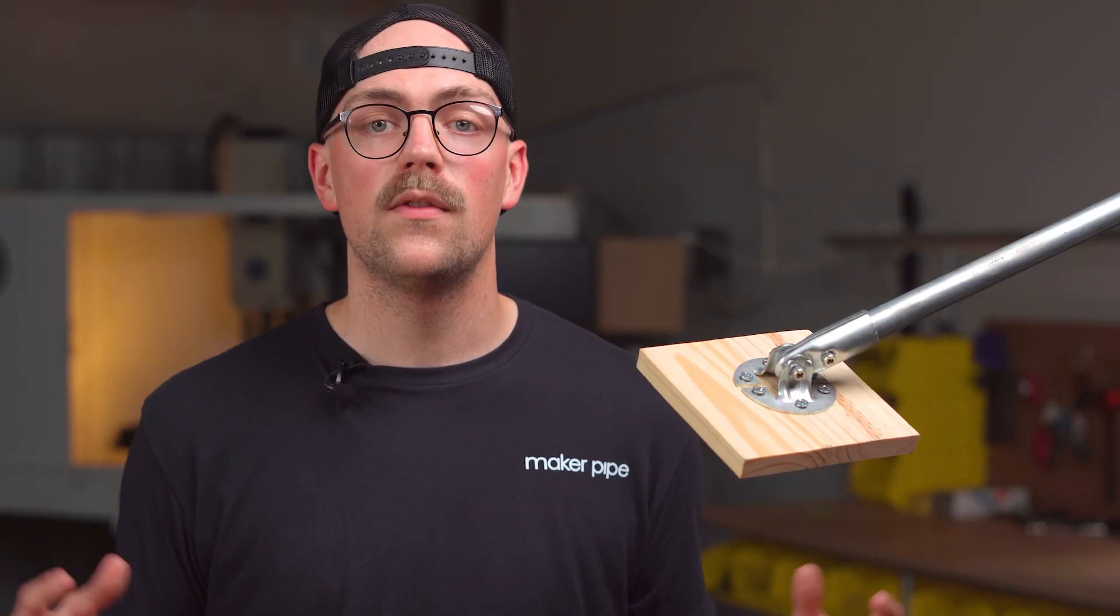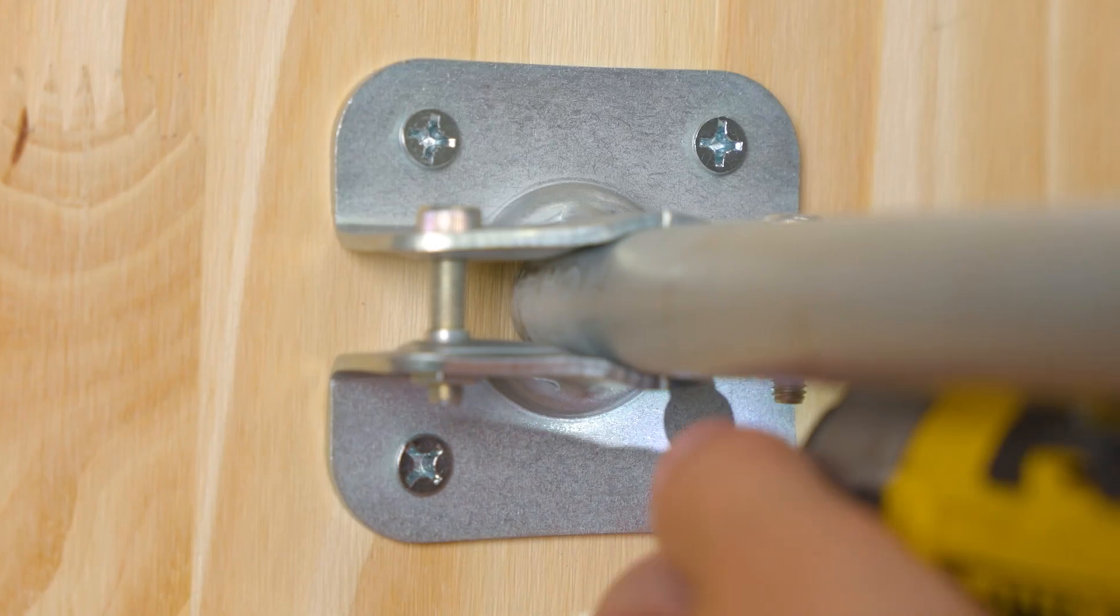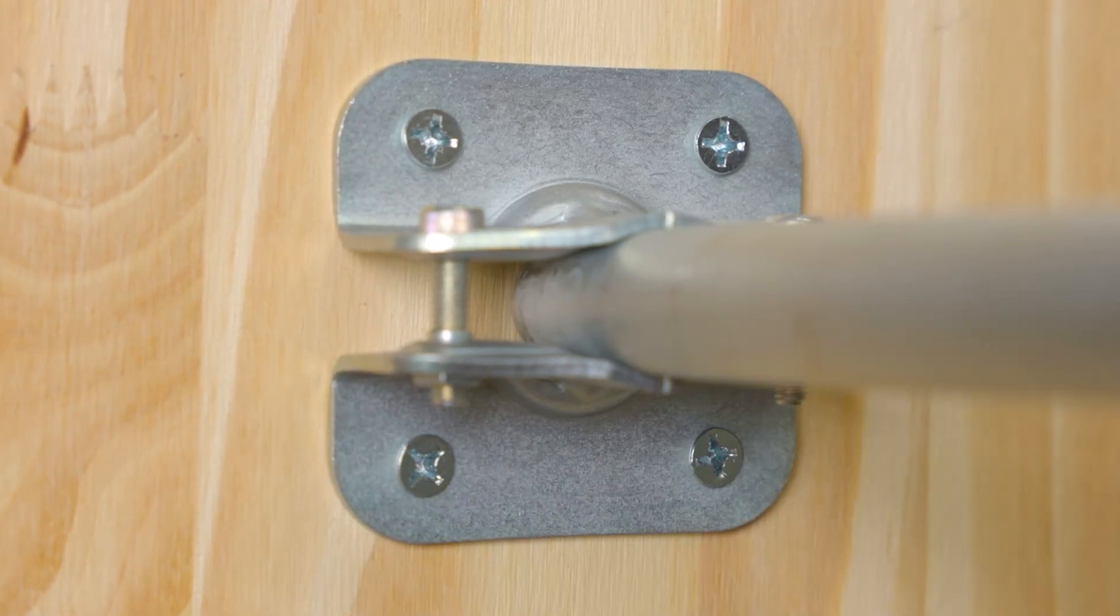Thanks so much for watching and be sure to check out the rest of the MakerPipe building system. The standard flange is another great solution for mounting electrical conduit to flat surfaces.